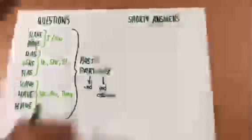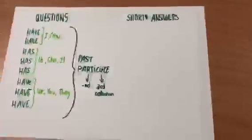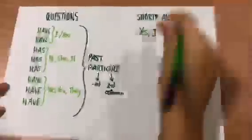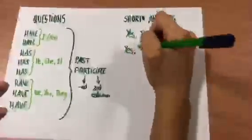Finally, to do the short answers, we put yes, I, you, we, and they have, and no, I, you, we, and they haven't. And yes, she, he, and it has, and no, she, he, and it hasn't.